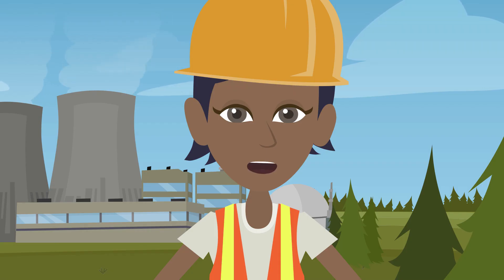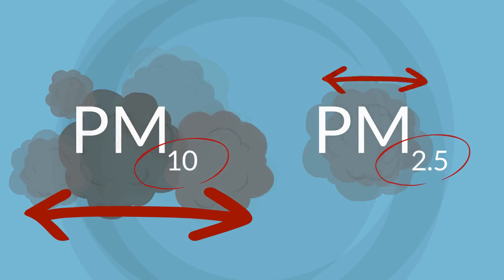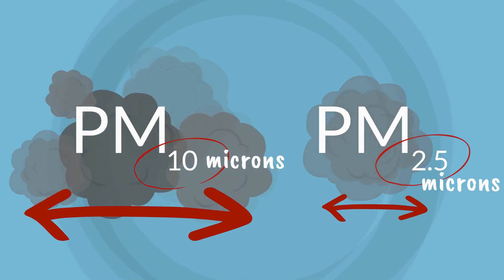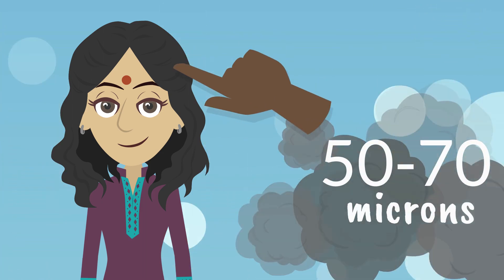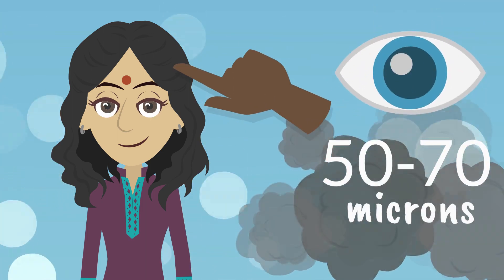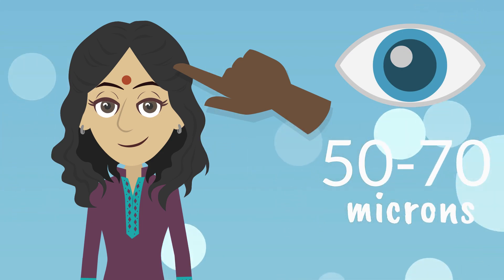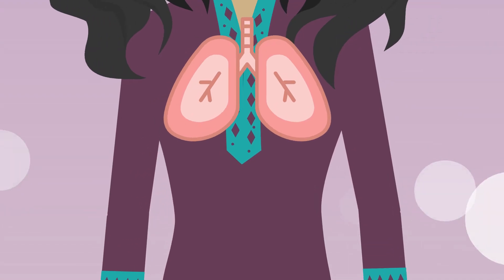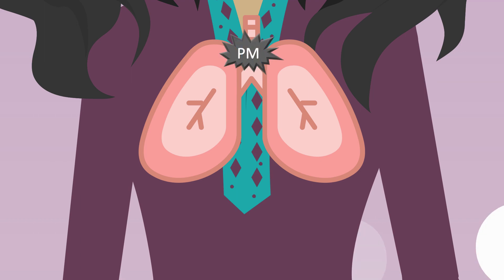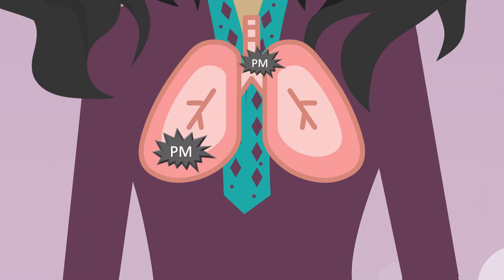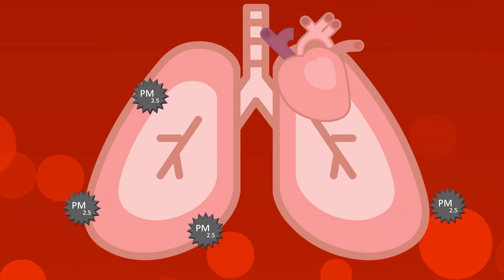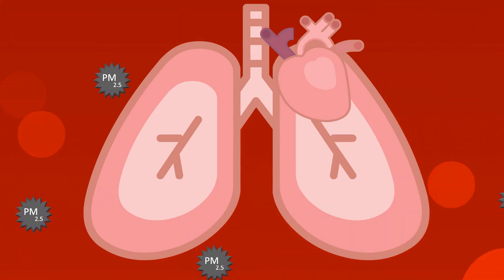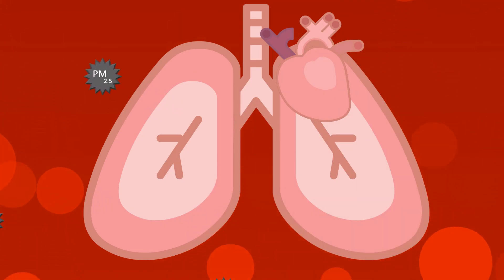PM2.5 particles are smaller than PM10. PM10 and PM2.5 particles are 10 and 2.5 microns in diameter, whereas a human hair is normally between 50 to 70 microns, meaning these particles are often invisible to the human eye. These ultra-fine particles can travel deep into the lungs and have serious health impacts. In fact, PM2.5 emissions are so small that they can pass straight through the lung wall and directly into your blood, which could cause heart attacks.